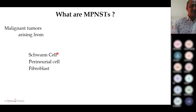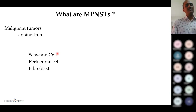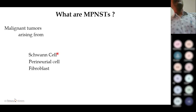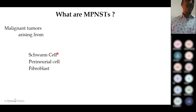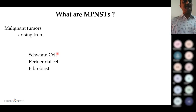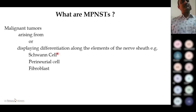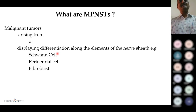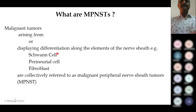MPNSTs are malignant tumors arising from either Schwann cells, perineural cells, or fibroblast cells — the contributing cells in the formation of the nerve sheath. Alternatively, if malignant tumors display differentiation along the elements of the nerve sheath (Schwann cells, perineural cells, or fibroblasts), that tumor can also be labeled as MPNST.